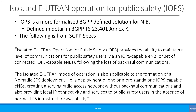The isolated E-UTRAN mode of operation is also applicable to the formation of a nomadic EPS deployment — that is, a deployment of one or more standard IOPS-capable eNodeBs creating a serving radio access network without backhaul communications, and also providing local IP connectivity and services to public safety users in the absence of normal EPS infrastructure availability. If you think about this, it's not really very different from what the Network in a Box concept is defined as, but it has a slightly different take on things.